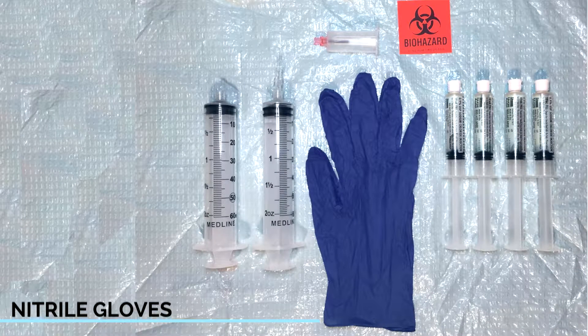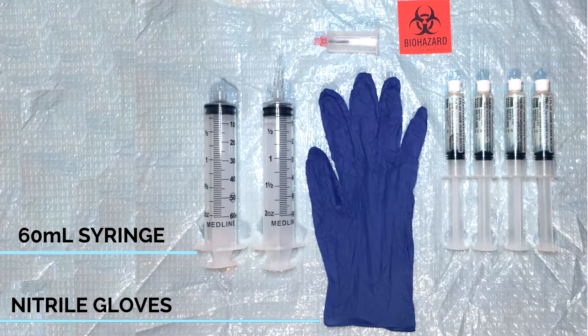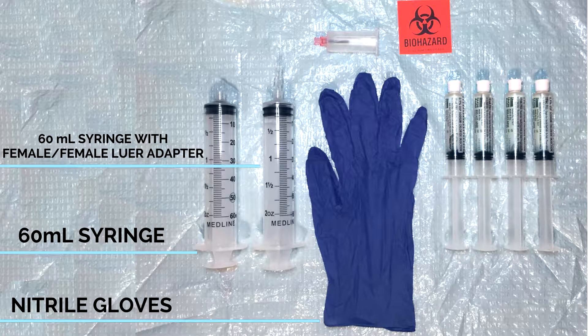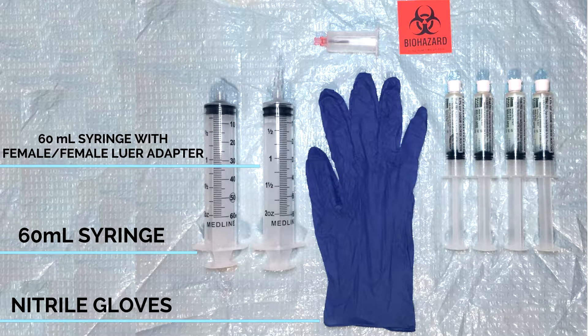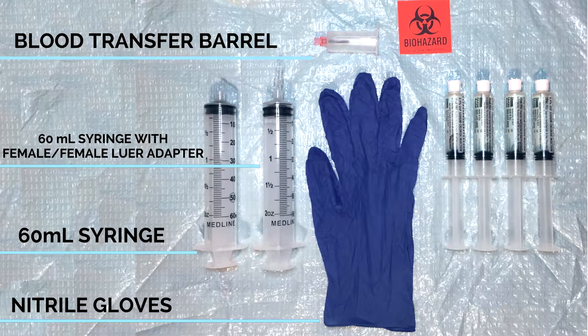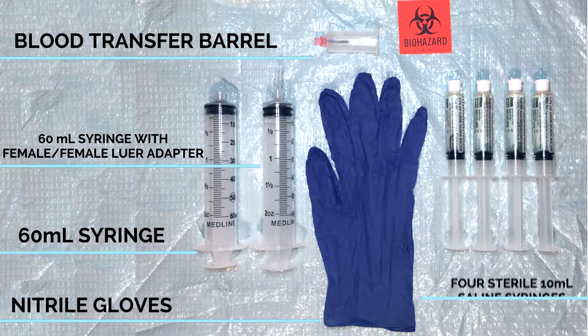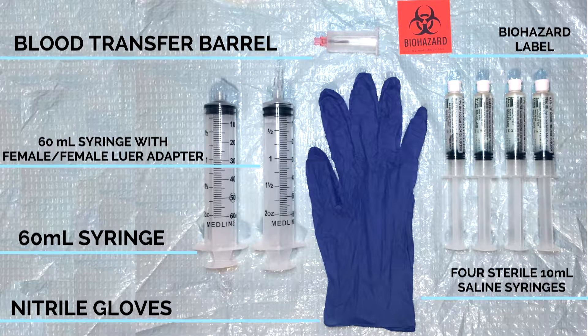Inside the prep kit, you'll find nitrile gloves, a 60 milliliter luer lock syringe, a second 60 milliliter syringe with a pre-attached female-female luer adapter, a blood transfer barrel with a female luer lock, four sterile 10 milliliter saline syringes, and a biohazard label.